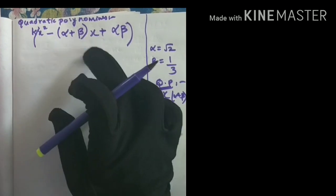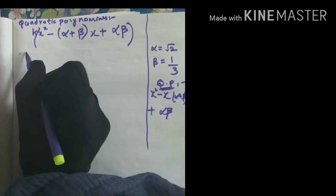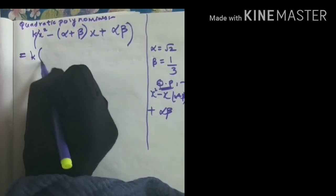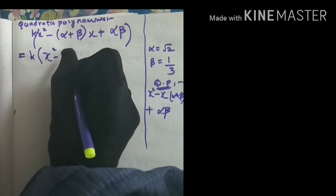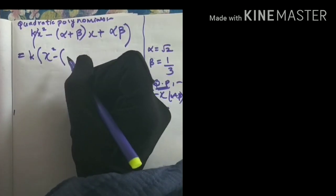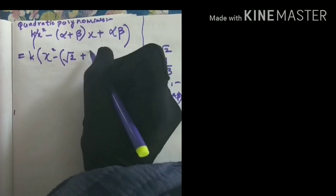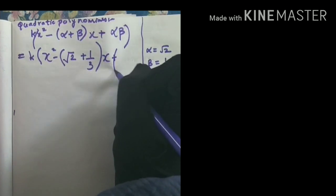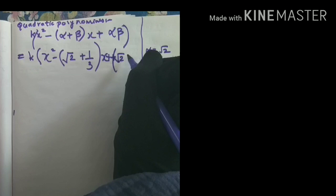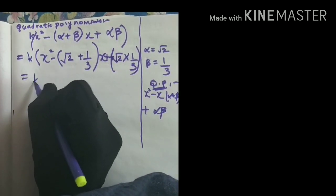Now I will substitute. Remember: x squared minus sum of zeros into x plus product of zeros. So substituting: k into x squared minus (alpha plus beta) into x plus alpha times beta. Alpha is root 2 and beta is 1 by 3. So alpha plus beta is root 2 plus 1 by 3, and alpha times beta is root 2 times 1 by 3.